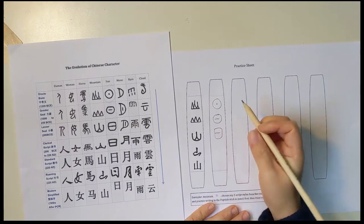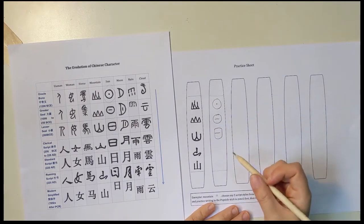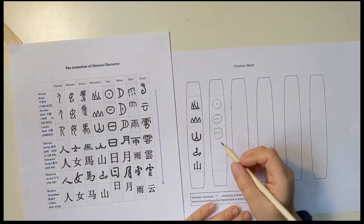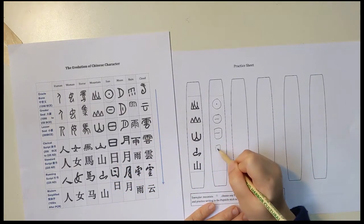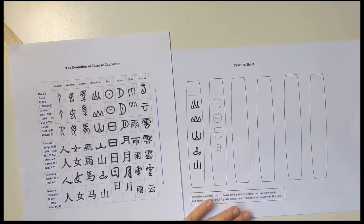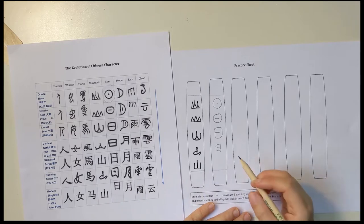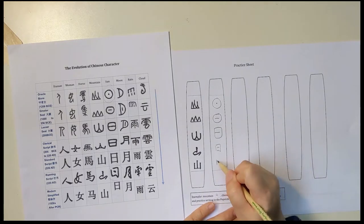As you may see, the character is becoming more and more square-based. And then I'm going to write the running script, and the last one, I'm writing the modern simplified script of the character Sun.